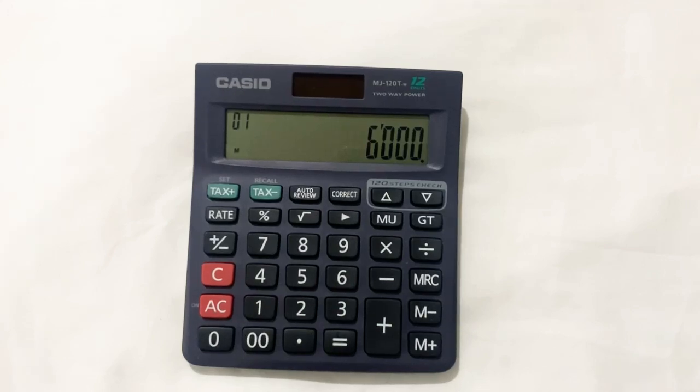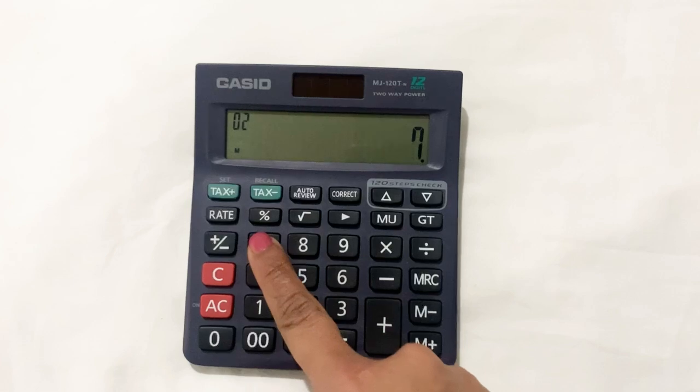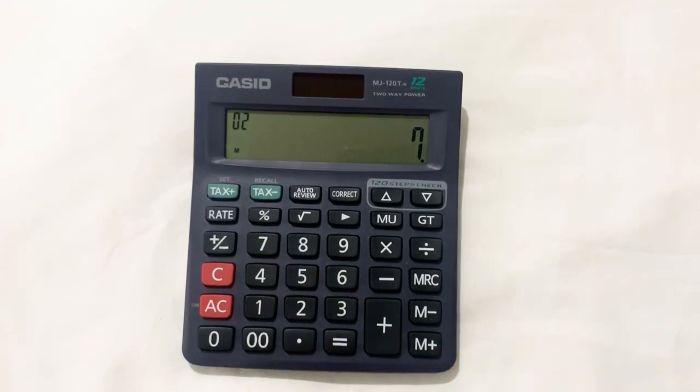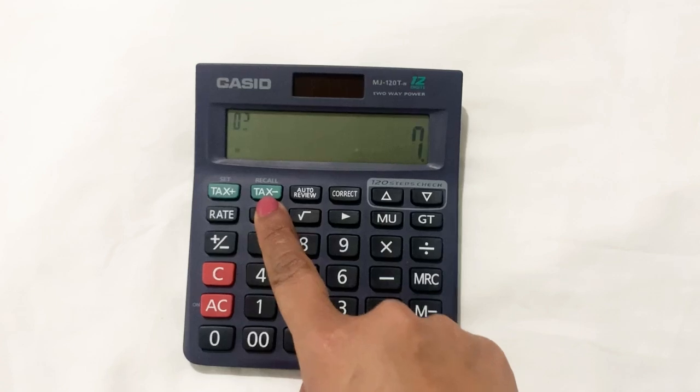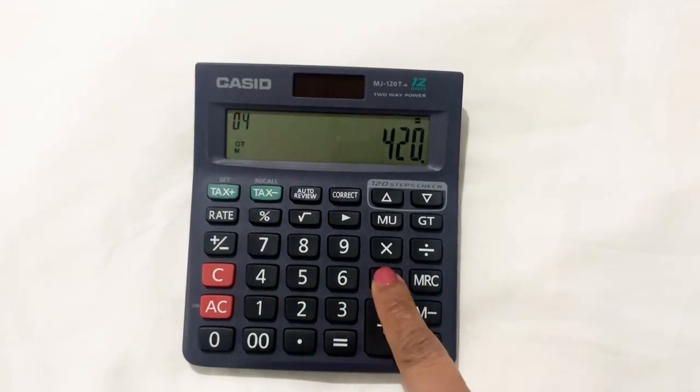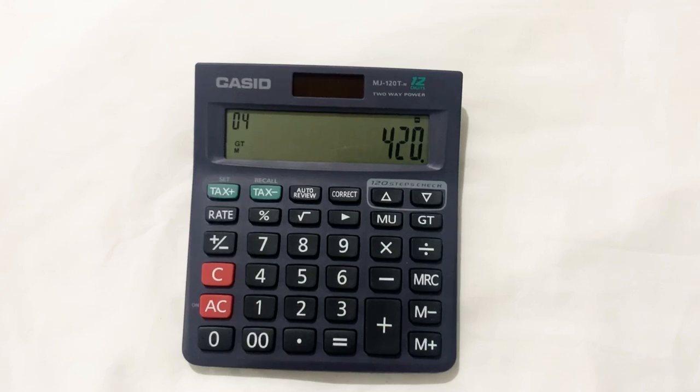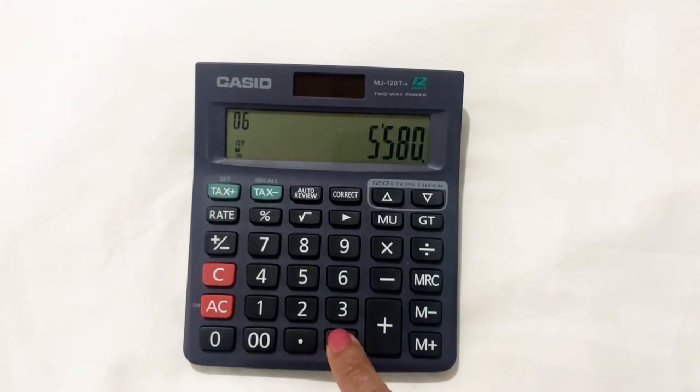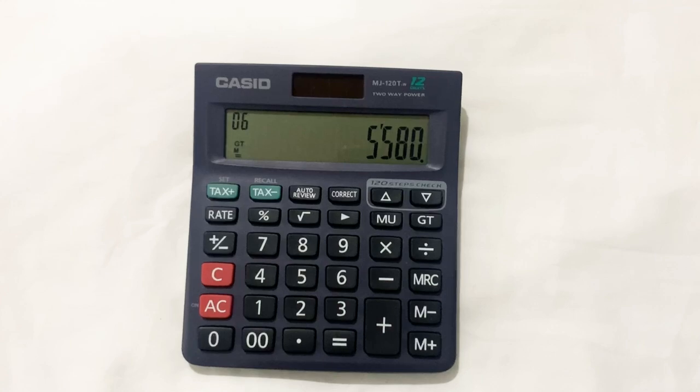Then we will press the percentage button, then we will press the minus sign. At the end we will press the equal to sign. So here's the final answer: 5,580. This is the final price after 7% off.